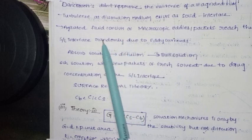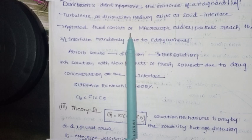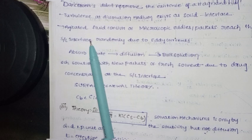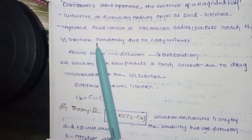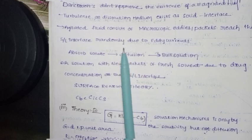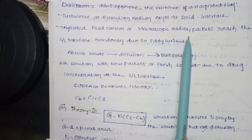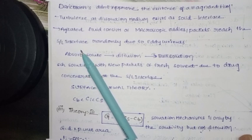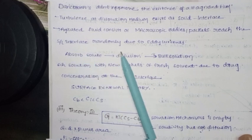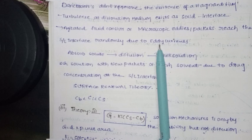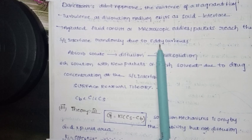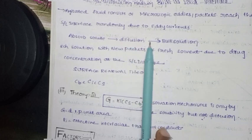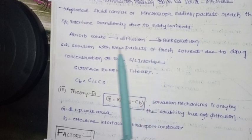Agitated fluid consists of macroscopic eddies. Agitation of fluid creates macroscopic eddies, and packets reach the solid-liquid interface randomly due to eddy currents. The eddies absorb the solid and then diffuse back into the bulk solution and penetrate.